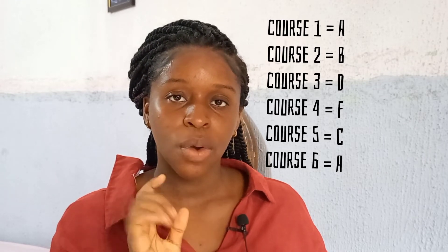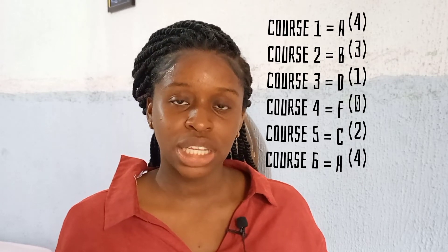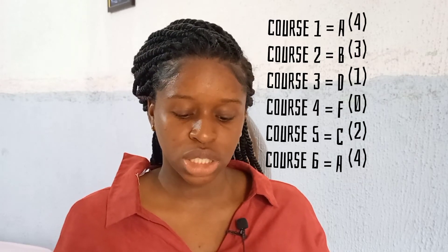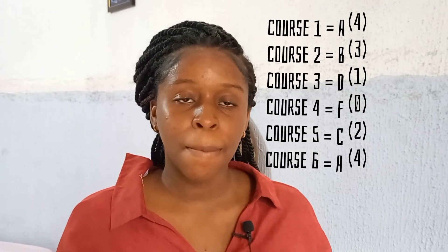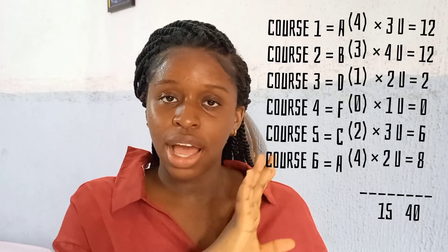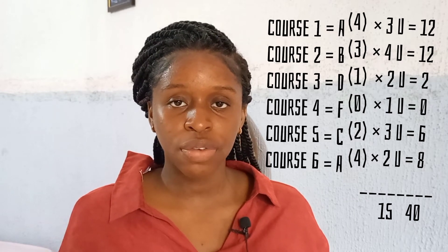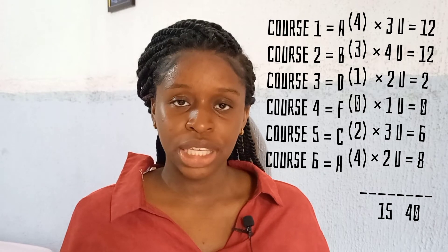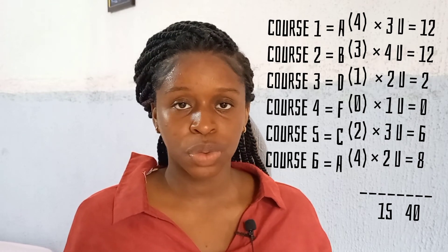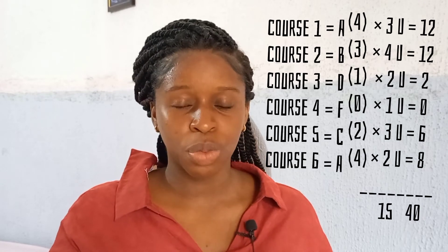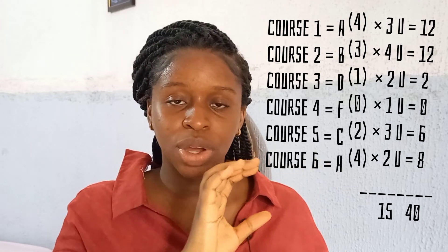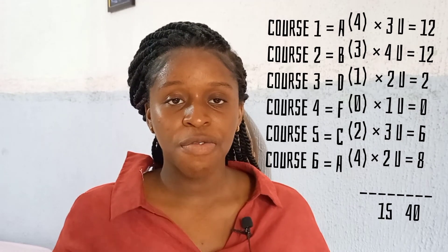We take the grade points attached to each grade and assign them to each course. The total of the grade points is 14. Then we multiply each grade point by the course unit: for the first course, 3 × 4 = 12; the second, 4 × 3 = 12. I'll put everything on the screen. We accumulate and add all the answers, which gives us 40.